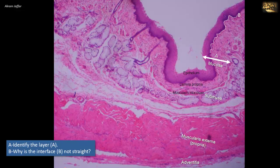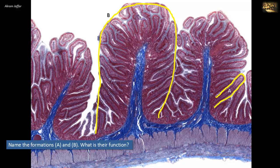These undulations permit forces applied by the formed contents at the surface of the epithelium to be dispersed over a greater area of connective tissue. Name the formations A and B. What is their function? The four distinct functional layers are shown again. The epithelial lining of the mucosa is simple columnar epithelium with goblet cells, characterized by their almost empty cytoplasm — an absorptive epithelium. Formation A consists of finger-like projections of the mucosa called villi, which increase the surface area of absorption.